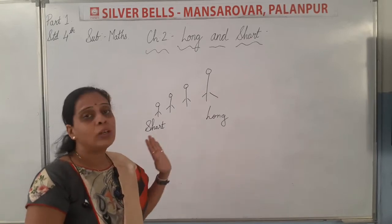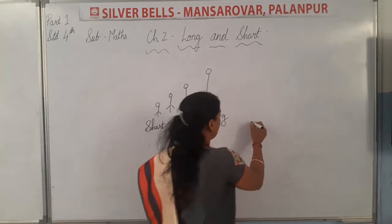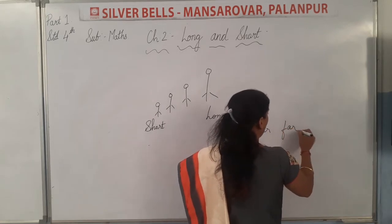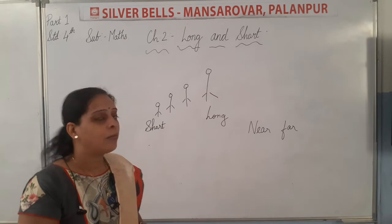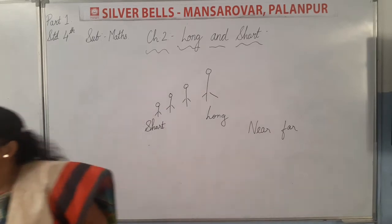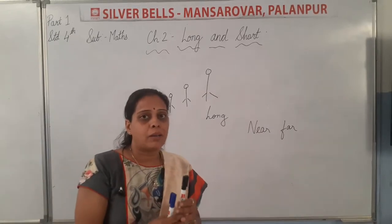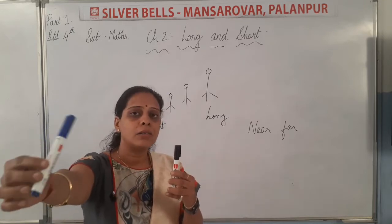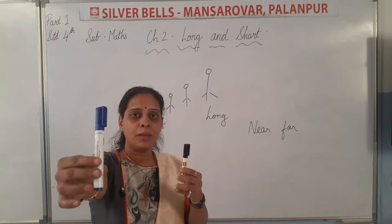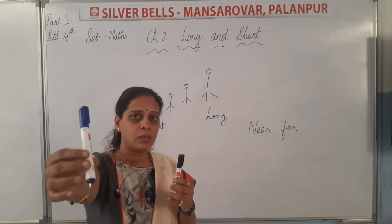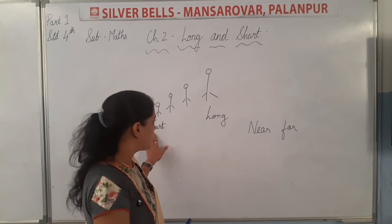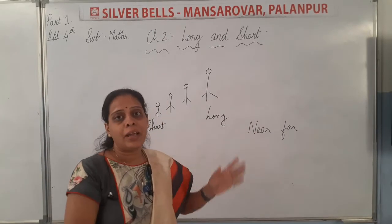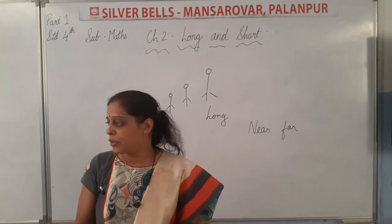Other than this, we also have to understand the concept of near and far. Near and far — near means what? Jo nasiq hai. And far means cho tu hai. For example, this marker — I am holding it very near to me. And this one is far from me. So, near means pass and far means door. If you have understood these two concepts, short and long, near and far very well, you will not have any questions in the next section which we are going to start.